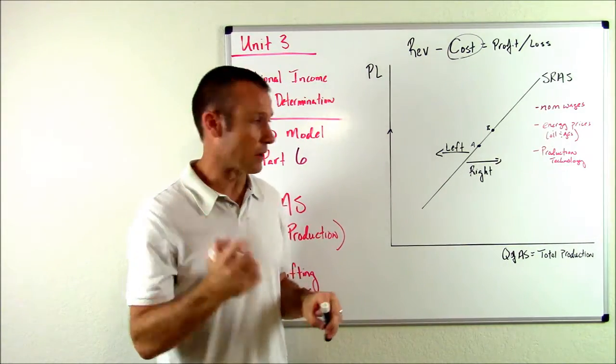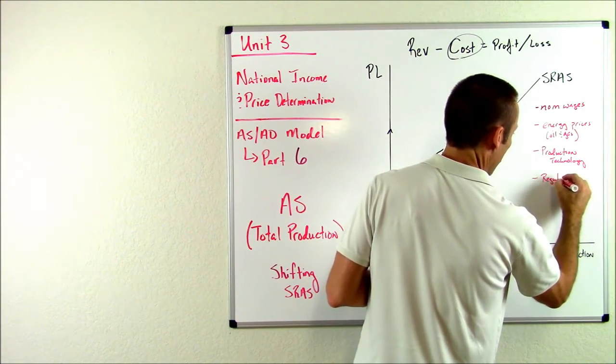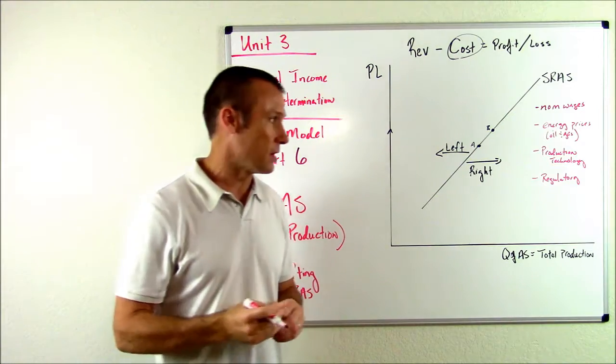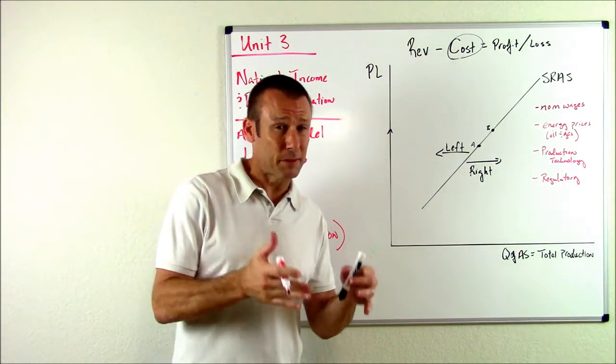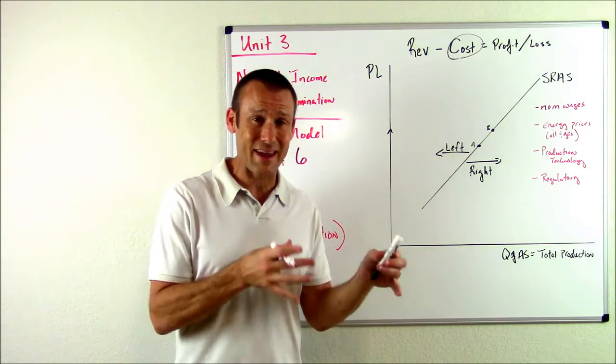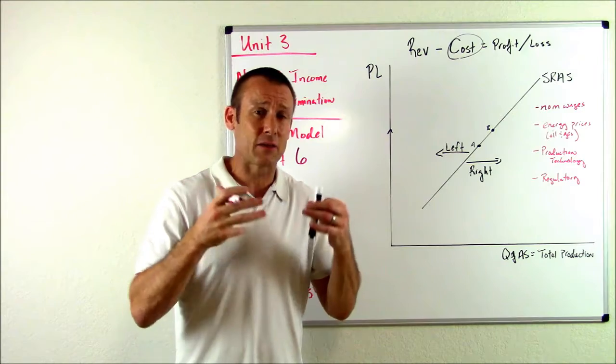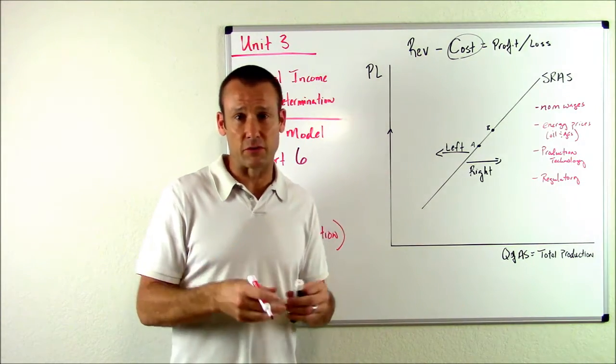Number four. Four is our regulatory environment, our regulatory environment. Think of our government. Things that we could see on a test is something like indirect business taxes. So if business taxes change, yep, that's going to shift the SRAS curve.